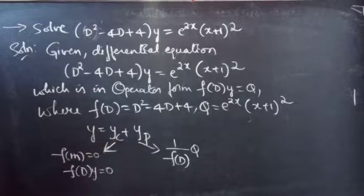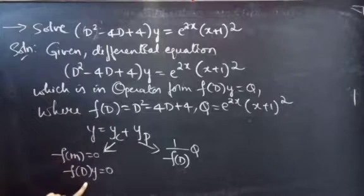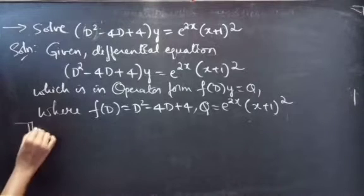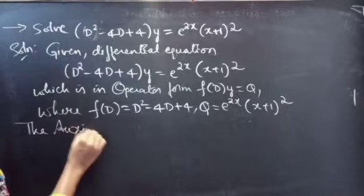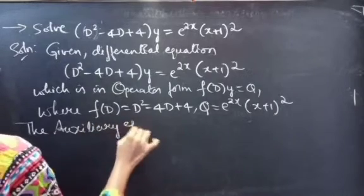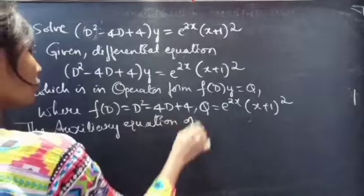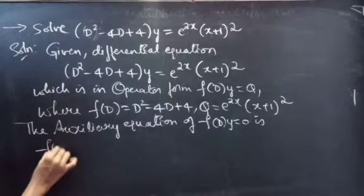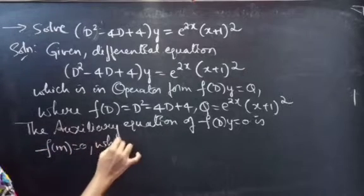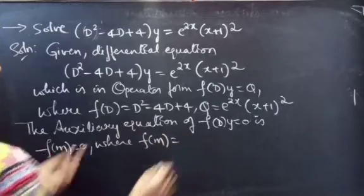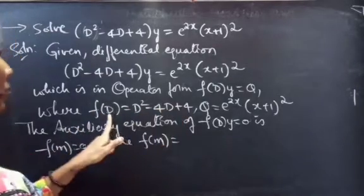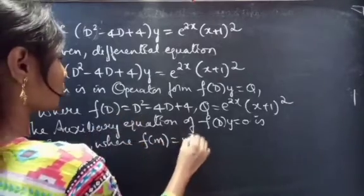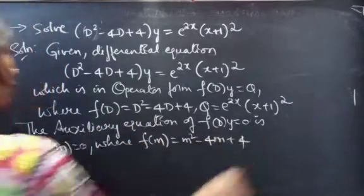Let's start with YC. We are going to find the complementary function using the auxiliary equation of the homogeneous equation of the given non-homogeneous equation. The auxiliary equation is F of M equals 0, where F of D equals D squared minus 4D plus 4. Replacing the differential operator D by M, we get F of M equals M squared minus 4M plus 4.